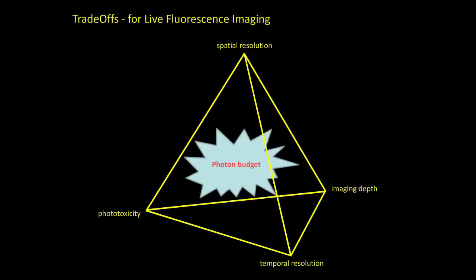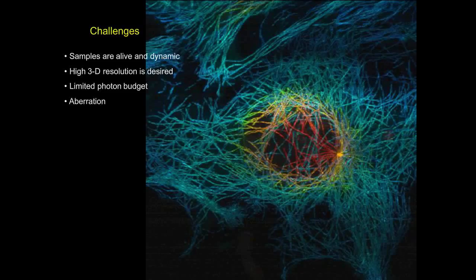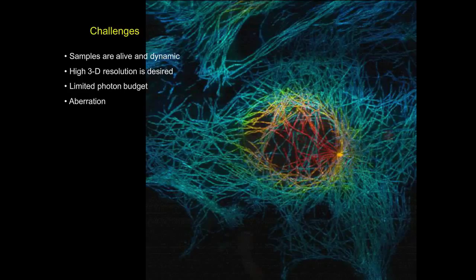All parameters should be based on the photon budget. If you have an unlimited photon budget, you can achieve very good resolution in both spatial and temporal domains, as well as depth. The main challenges for live imaging include: first, the samples are dynamic, so imaging speed must be fast enough to avoid motion blurring. Second, we need true 3D resolution — specifically isotropic resolution in 3D, since axial resolution is typically the worst in microscopy.